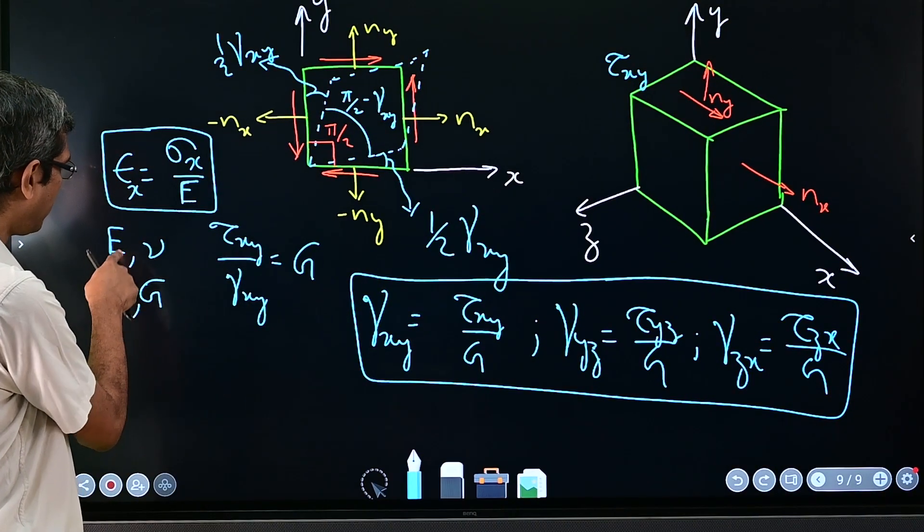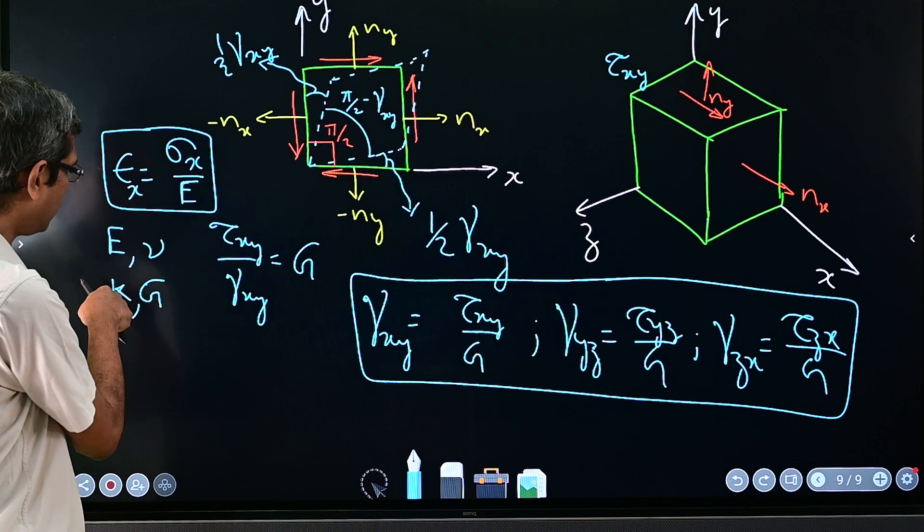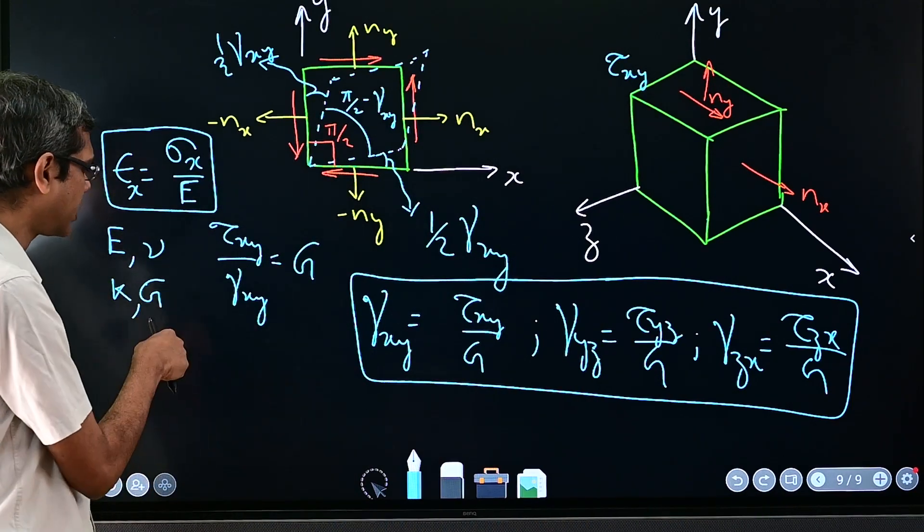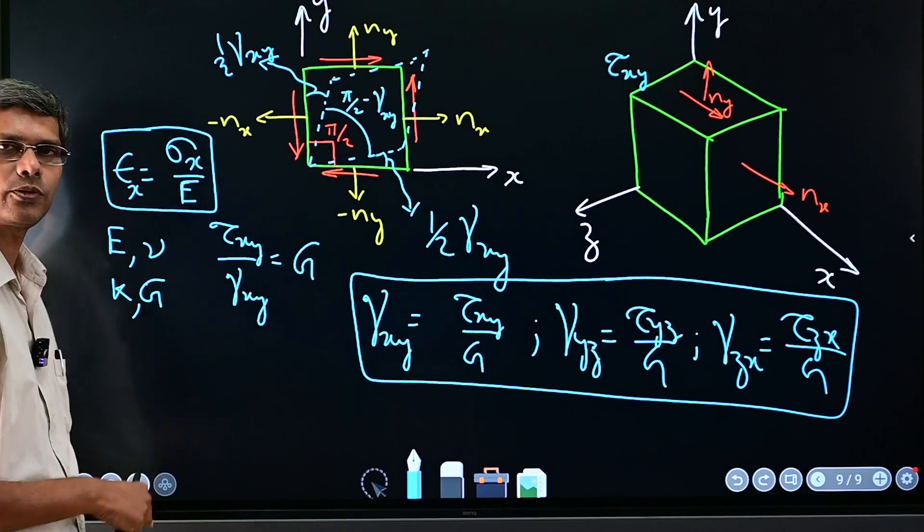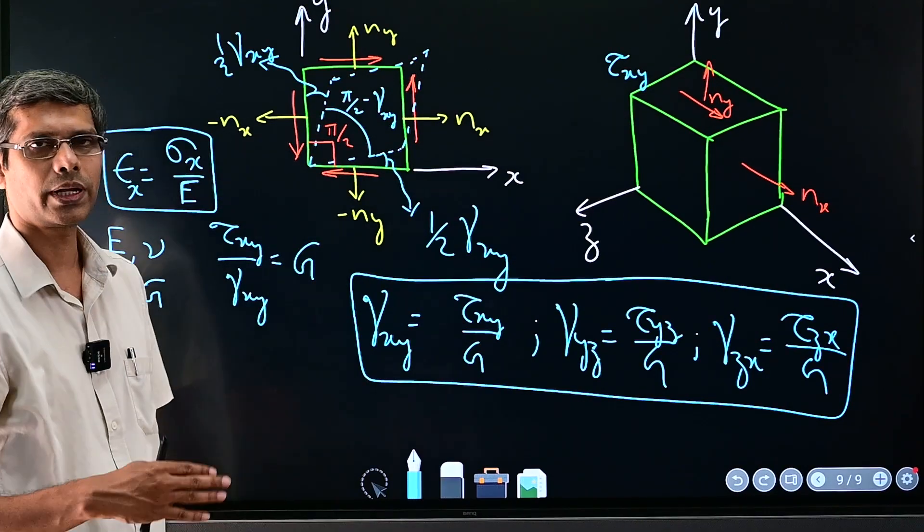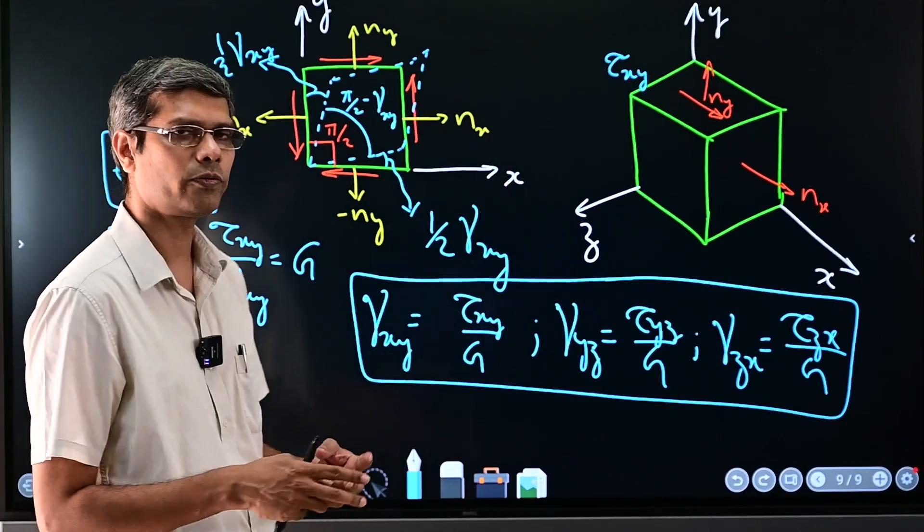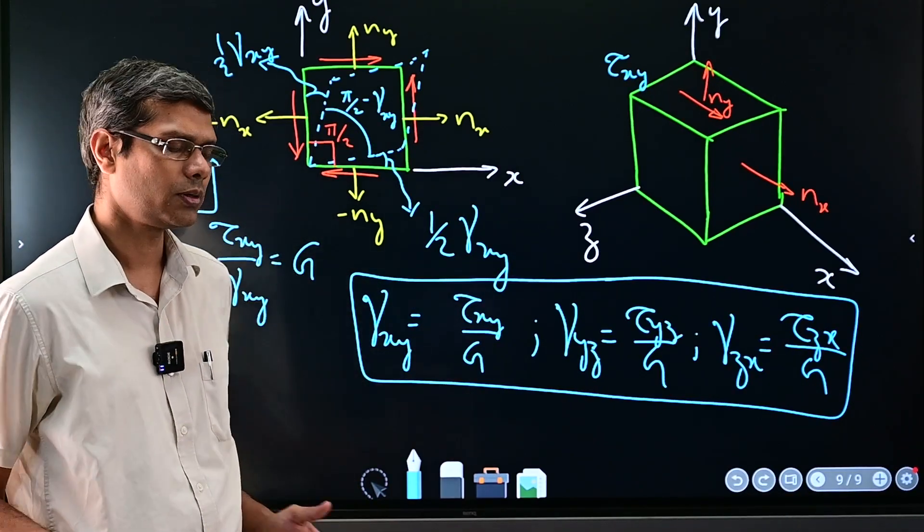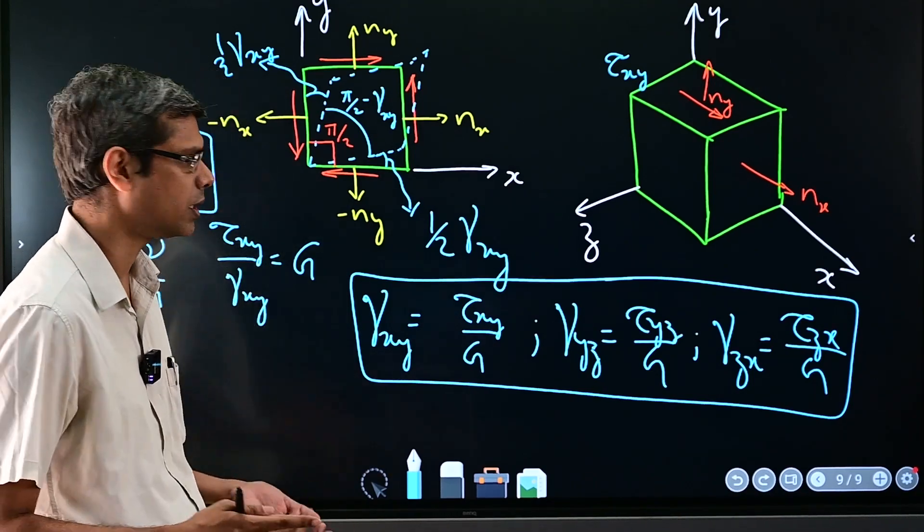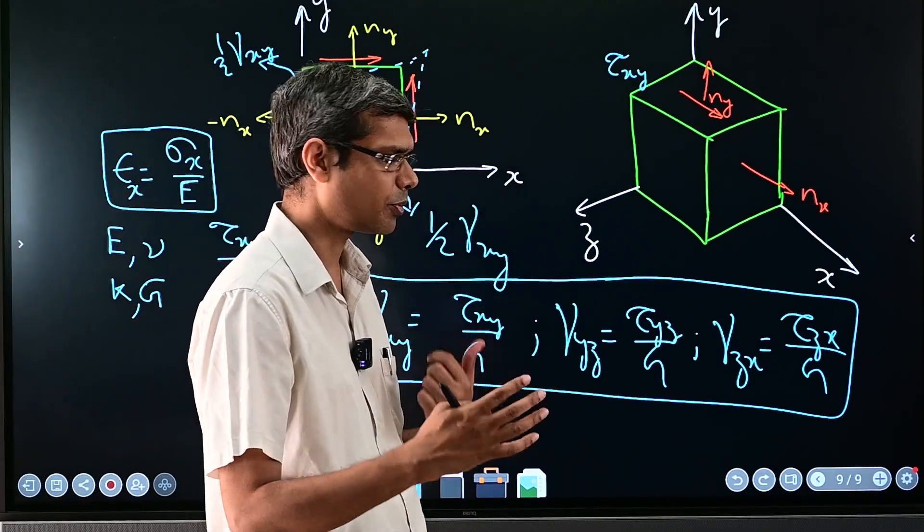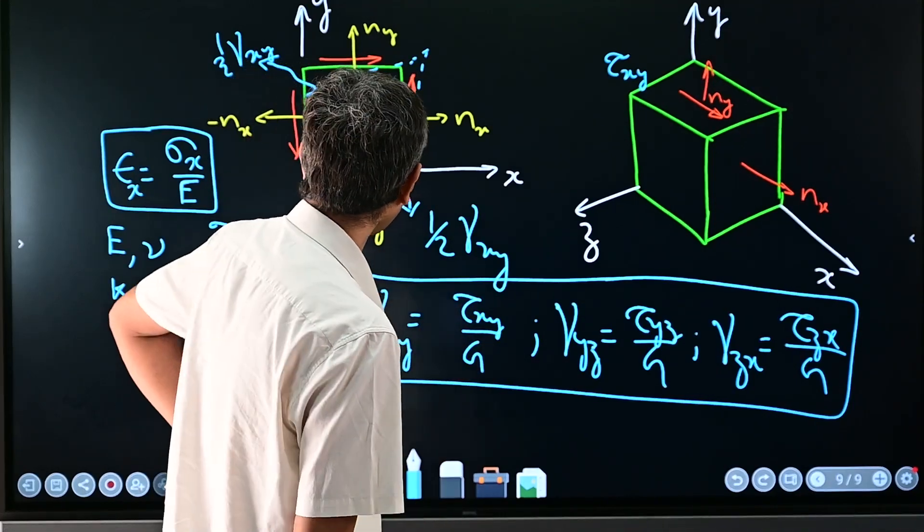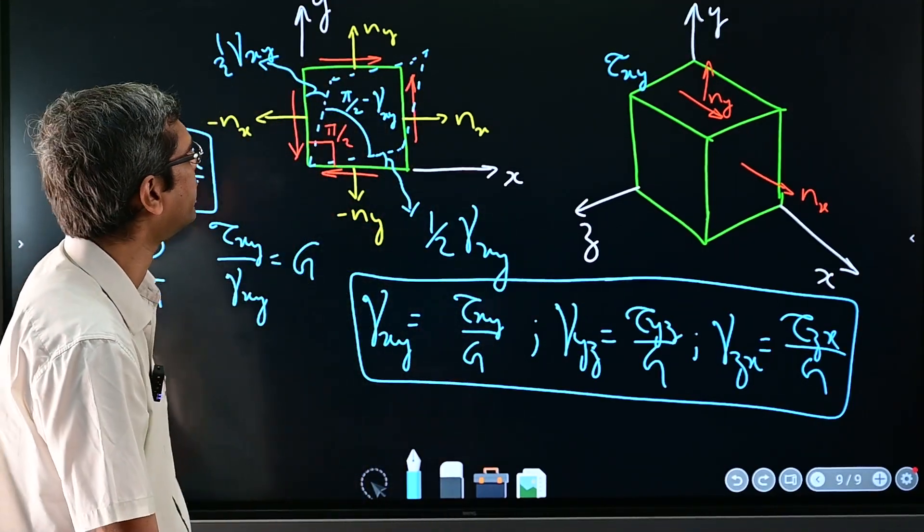These are four material properties, and earlier also we saw that k is not independent, E and nu can be used to define k. Similarly later we will see that G is also not independent, so out of all these four things any two if you can measure, the other two you can actually evaluate. So any two of them are independent for the materials which we are considering, so homogeneous isotropic linear property.